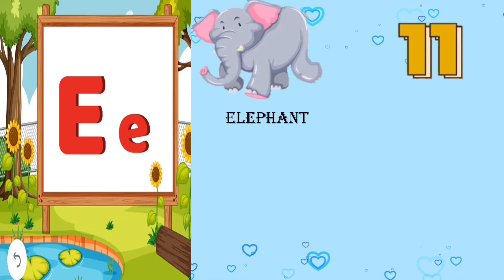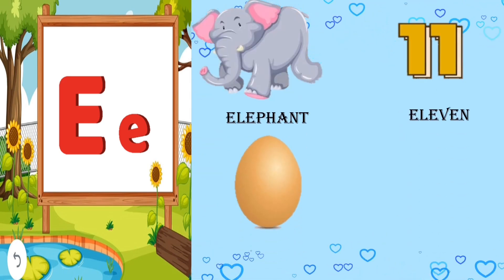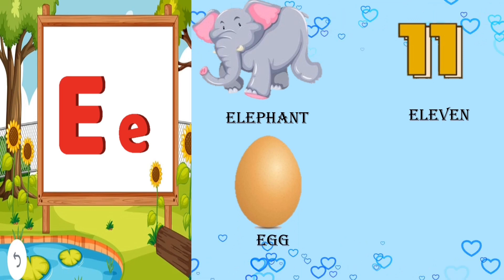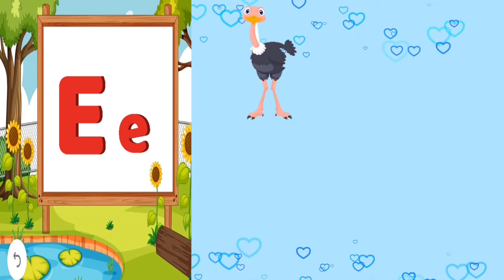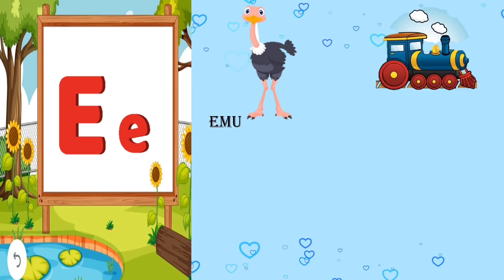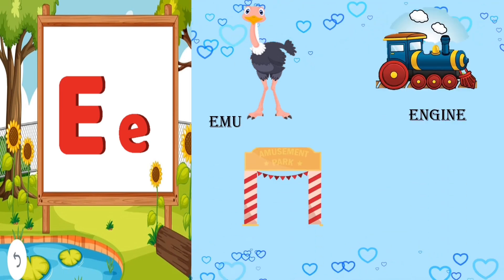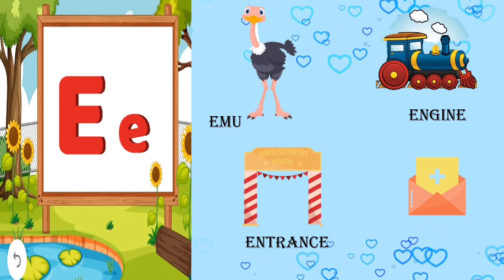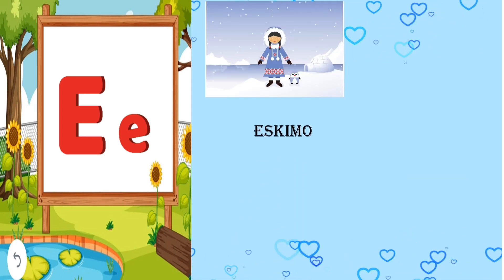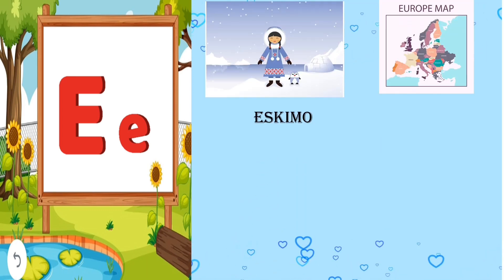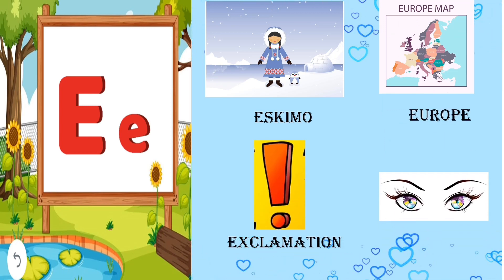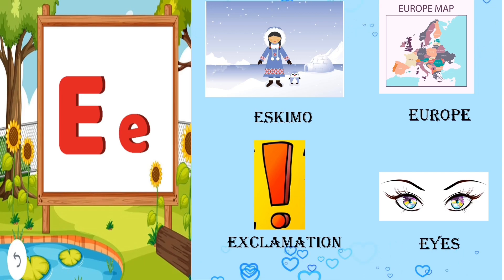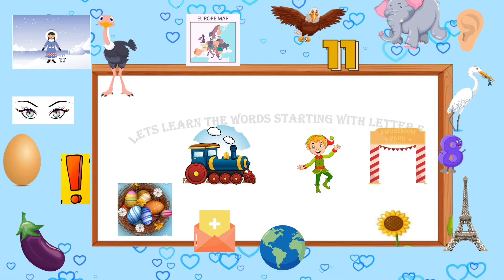E for elephant, E for eleven, E for egg, E for elf, E for emu, E for engine, E for entrance, E for envelope, E for Eskimo, E for Europe, E for exclamation, E for ice.